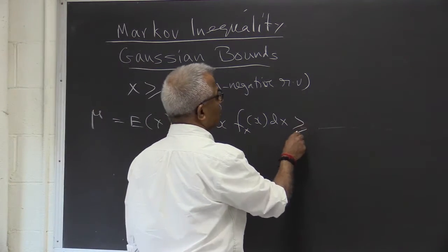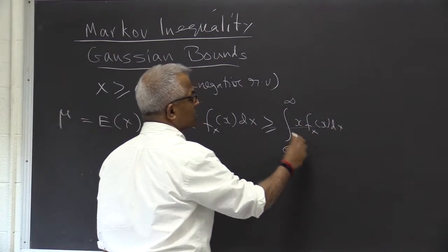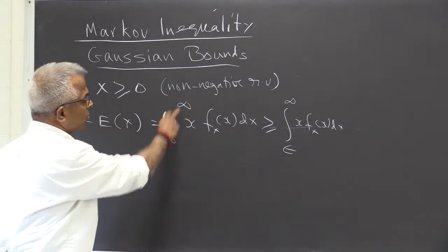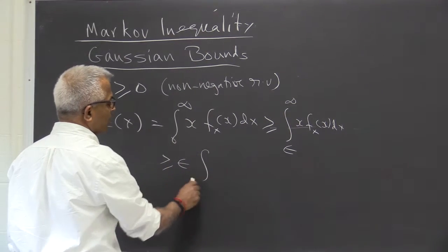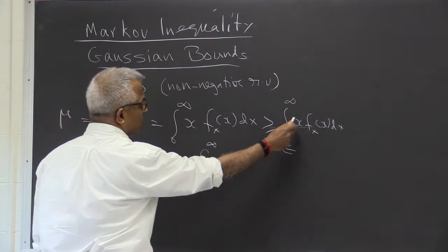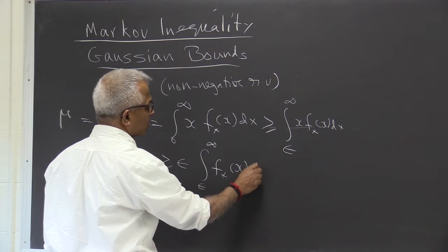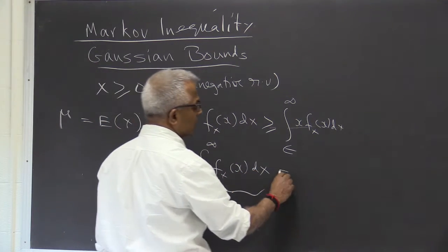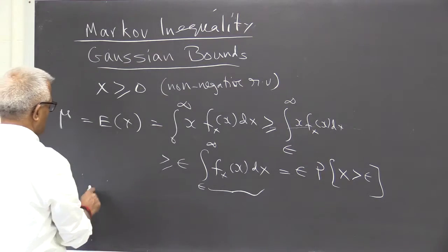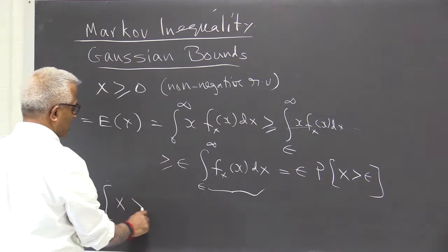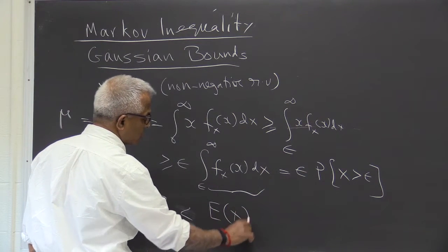This integral is certainly greater than the integral over a subset — instead of integrating from 0 to infinity, we only integrate from ε to infinity. That is certainly greater than if we substitute ε in place of x and pull ε outside the integral. But this remaining quantity is the probability of the random variable x being greater than ε. So we get the Markov result: probability of x greater than ε is less than or equal to expected value of x over ε.